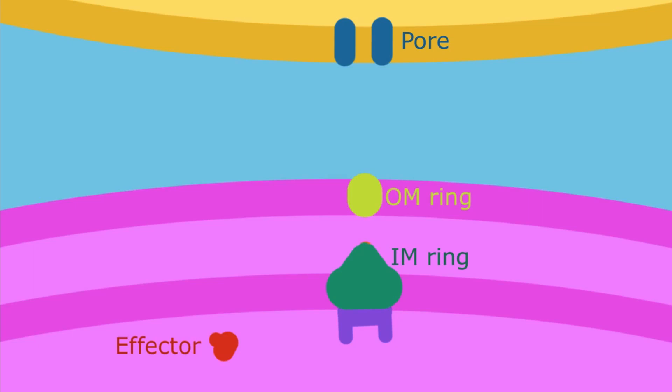The bacteria that has type 3 secretion system has an inner membrane ring and an outer membrane ring. Those will synthesize a needle-like structure that will protrude and lock onto the target cell's membrane pores.